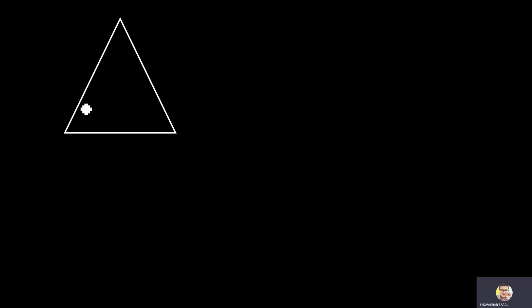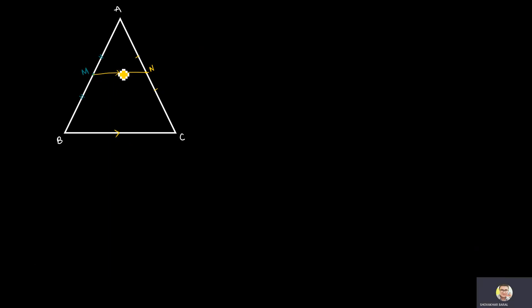Consider a triangle ABC. Let M be the midpoint of side AB, and N be the midpoint of side AC. Then the line joining these two points M and N — that is, line MN — is parallel to the third side BC, and MN is equal to half of BC. This is the statement we have to prove.